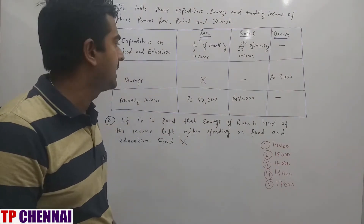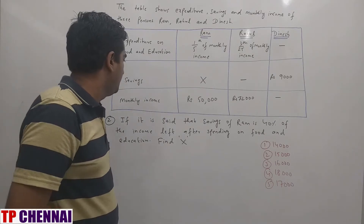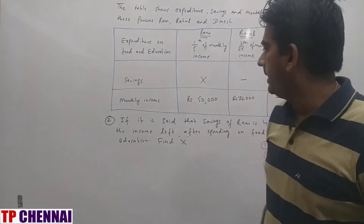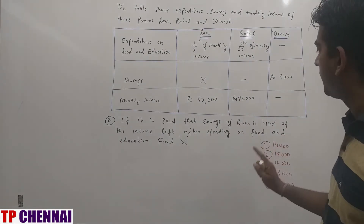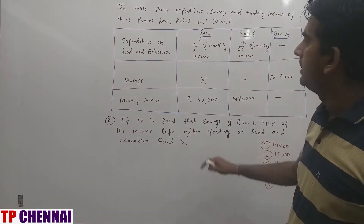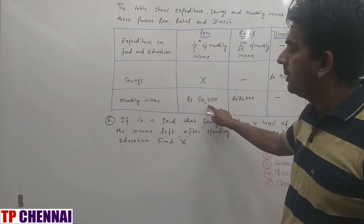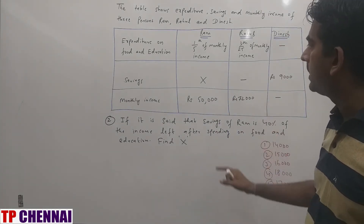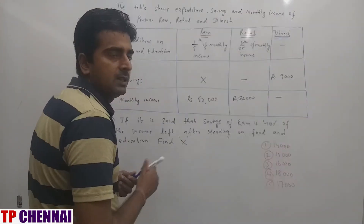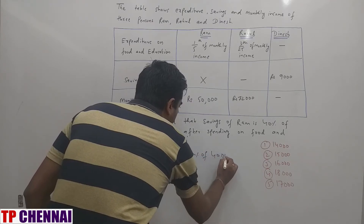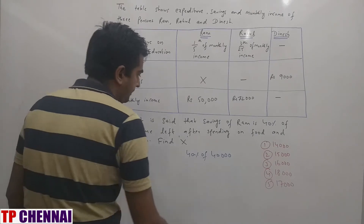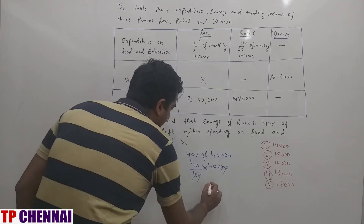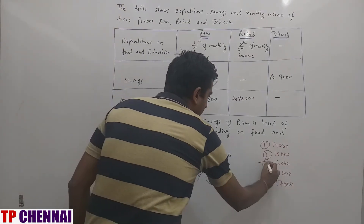Question 2: If savings of Ram is 40% of the income left after spending on food and education, find the value of X. Expenditure on food and education is 1/5 of 50,000 = 10,000. Remaining income is 50,000 − 10,000 = 40,000. Savings of Ram = 40% of 40,000 = 16,000, which is the third option.